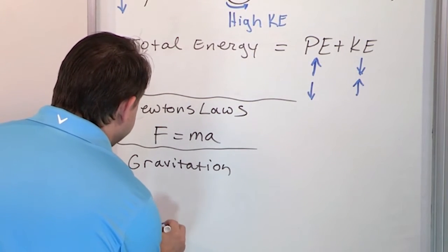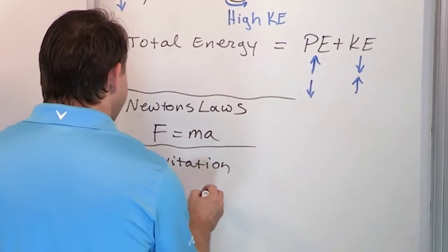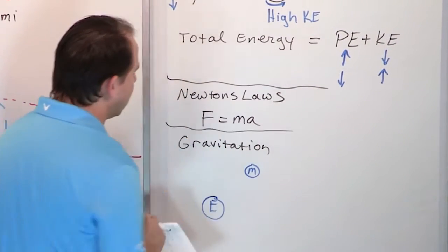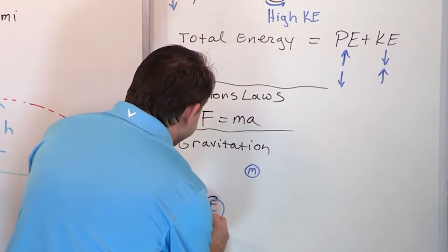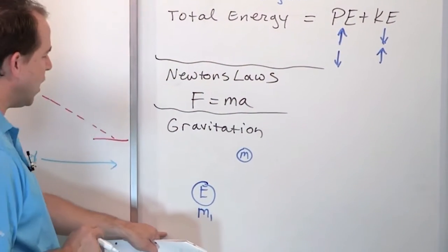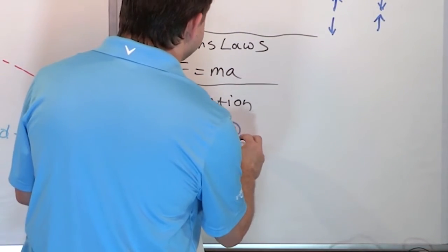If we have a planet, we're going to call it Earth, and we have a Moon here we call M. So the Earth has some mass, we call it M1, and the Moon has some mass and we call it M2.